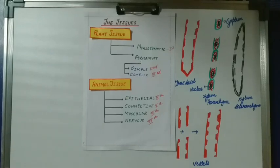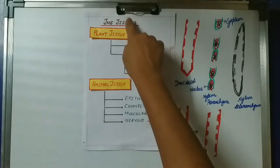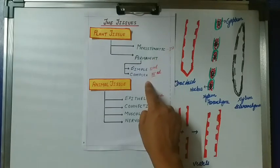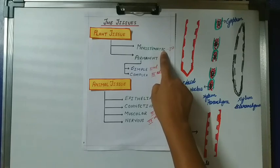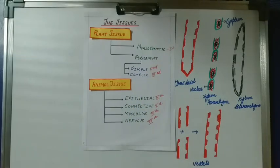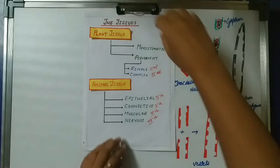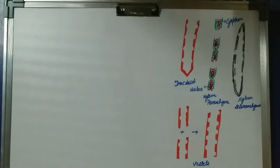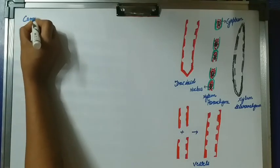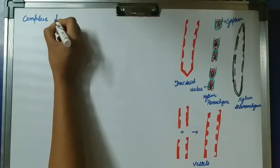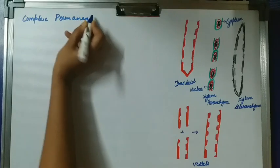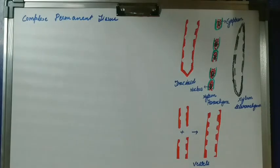Hello students, welcome back to my channel Krita. I am back with the third part of your chapter on tissue. In this third part we will discuss about the permanent complex tissue. We had already seen the meristematic tissue in the first part and the permanent simple tissue in the second part. I will provide you the link in the description box. Do watch the video till the end for clear and proper understanding.